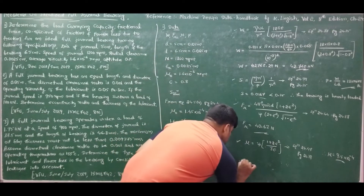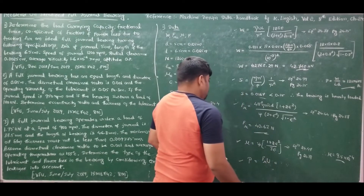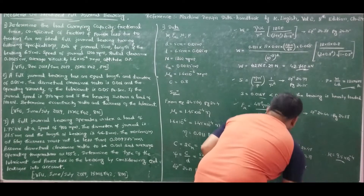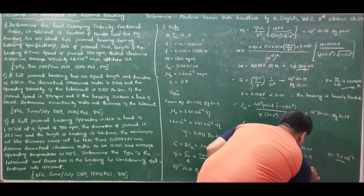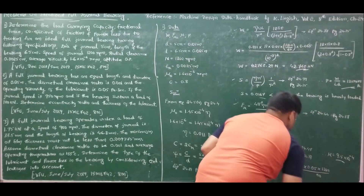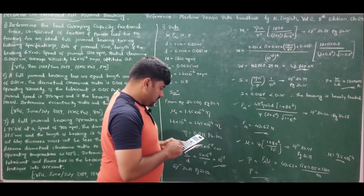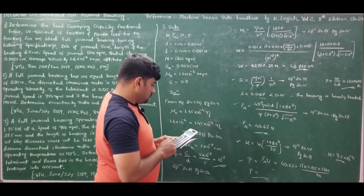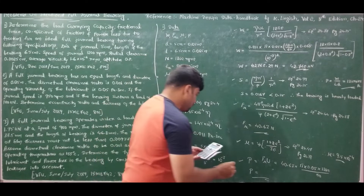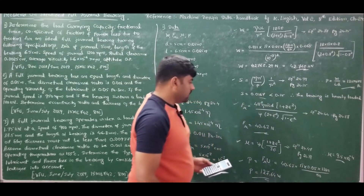Finally, power loss due to friction is F_mu × U = 40.63 × (π × 0.05 × 1200/60) = 127.64 W = 0.127 kW. This completes the solution for problem number 1.